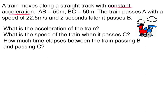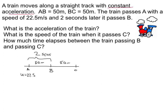So let's start filling in the information we know. We've got a train track with points A, B, and C. A to B is 50 metres, B to C is 50 metres, and therefore A to C is 100 metres. At A, the speed is 22.5 metres per second, and it takes two seconds to get from A to B. We're trying to find the acceleration of the train.